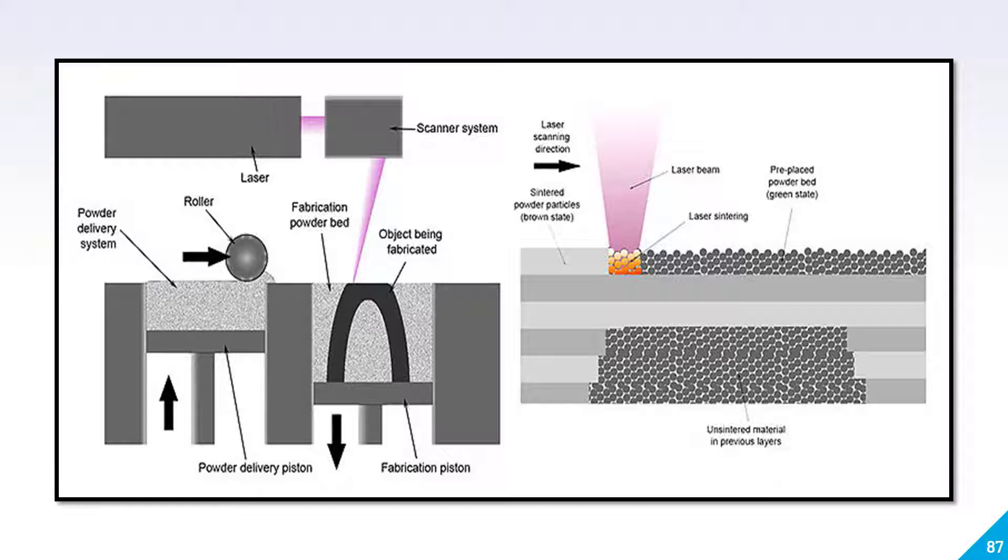Once one layer is completed, below the layer there is always powder, and above the layer there is powder. So you don't need to give it support. This is the biggest advantage, and that's why the material wastage is very low in SLS 3D printers.